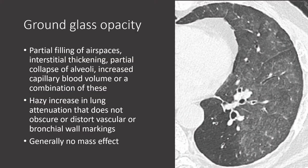Let's compare consolidation to ground glass opacity. Ground glass opacity on CT appears as areas of increased lung density that does not obscure or distort underlying bronchovascular markings. On the right-hand image, there is an area of increased lung density throughout the left upper and lower lobes. The more lucent lung is actually normal lung, while this entire area represents ground glass opacity. This could be the result of partial filling of air spaces, similar to consolidation.